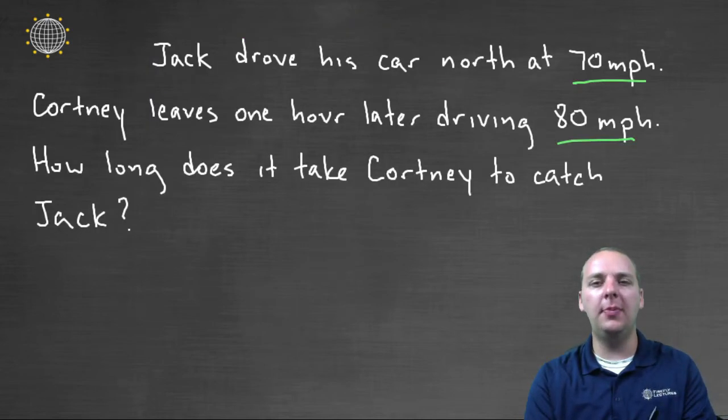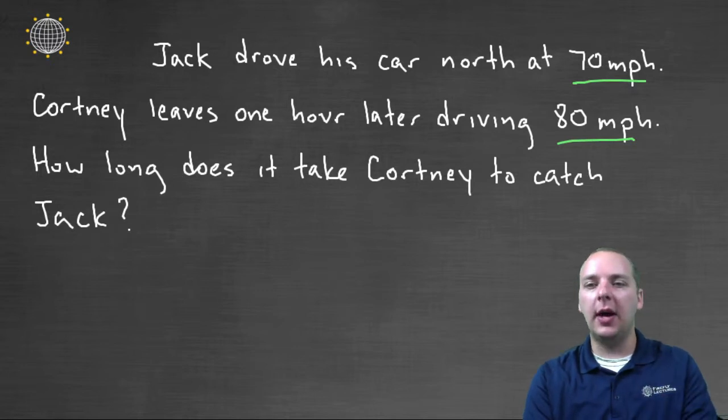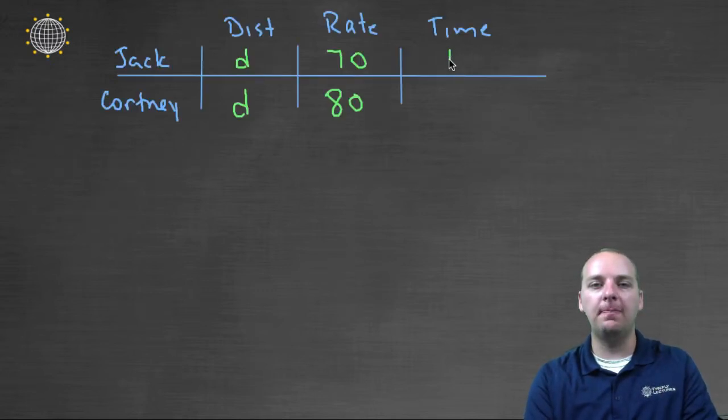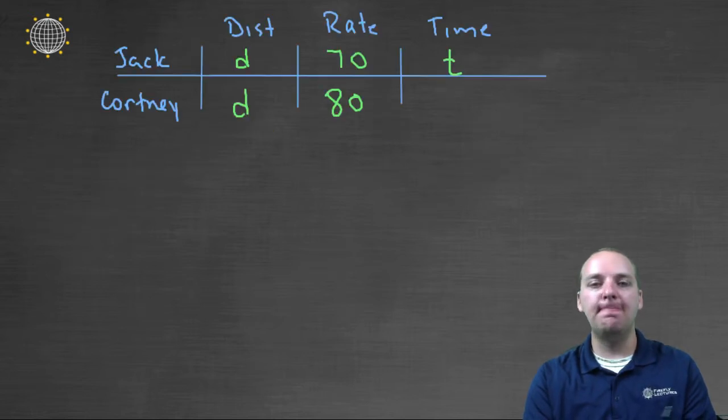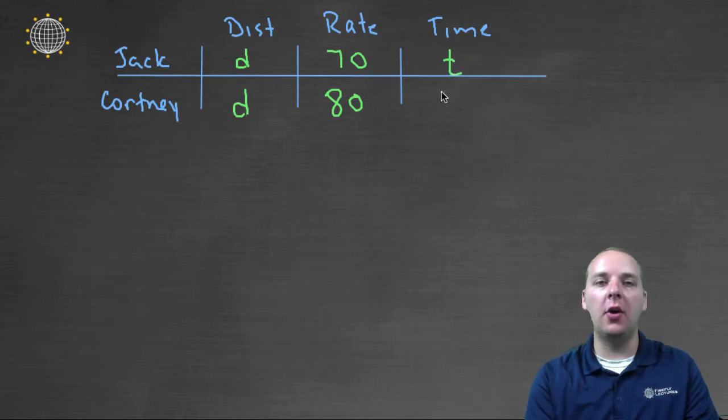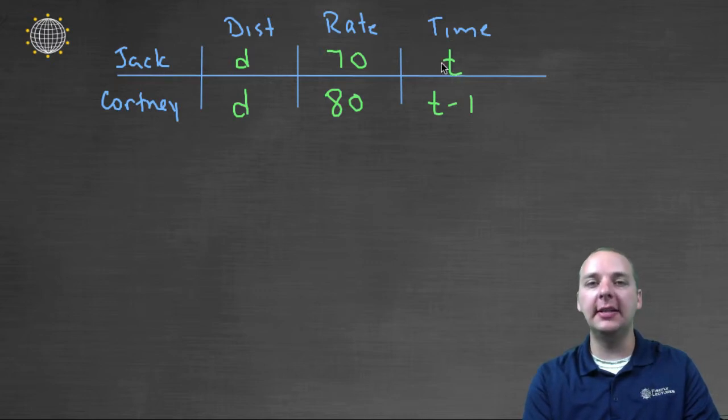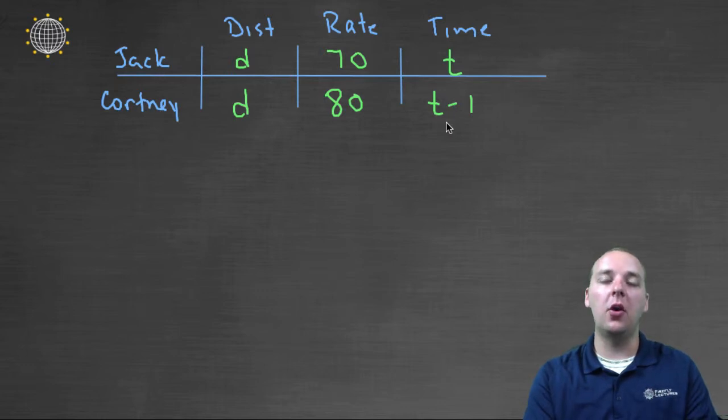Alright, now what about time? It doesn't really mention a whole lot about time either. So I don't know how long Jack was in the car, I don't know how long that he drove, but what I do know, is that Courtney leaves one hour later. So however long Jack was in the car, Courtney was in the car, one hour less than that. Now I don't know if Jack was in the car ten hours and Courtney nine, or Jack was in the car seven hours and Courtney six. I don't know what those two hours are, but I do know that Courtney's should be in the car one hour less, because she left an hour later.